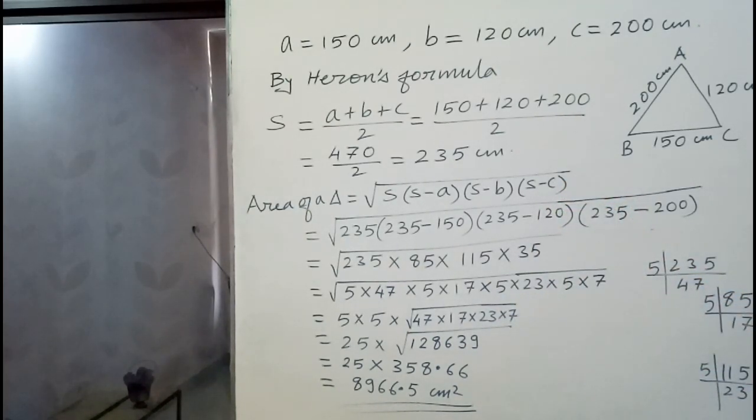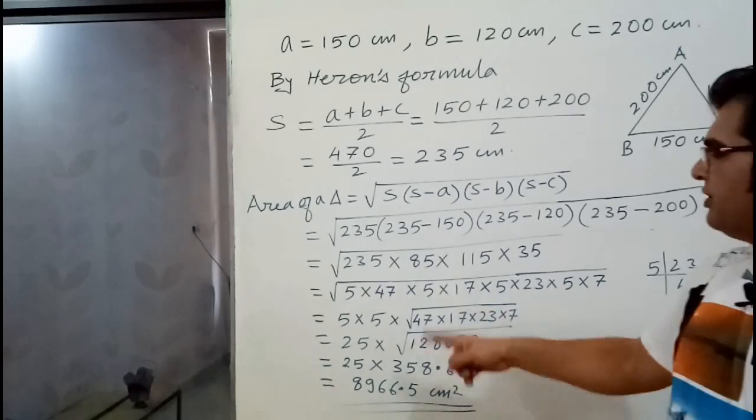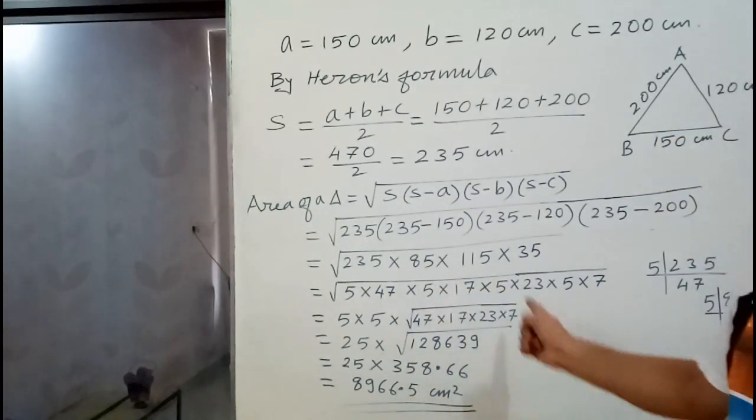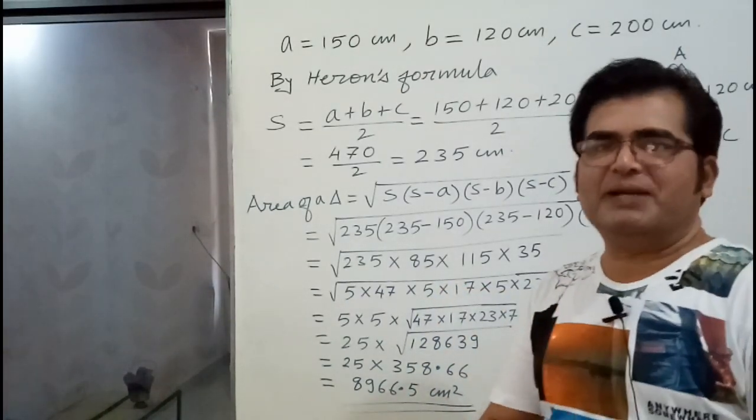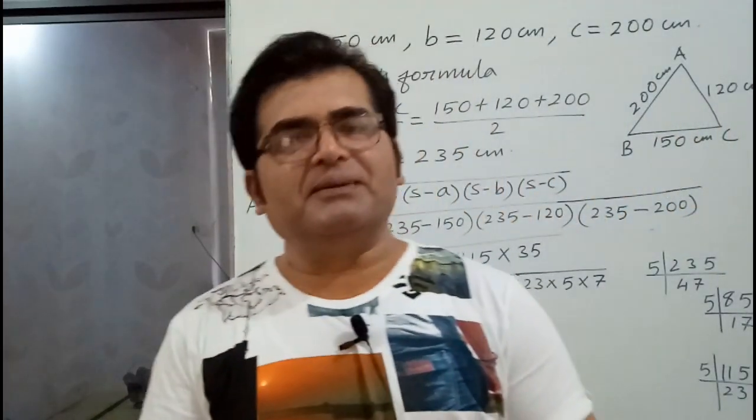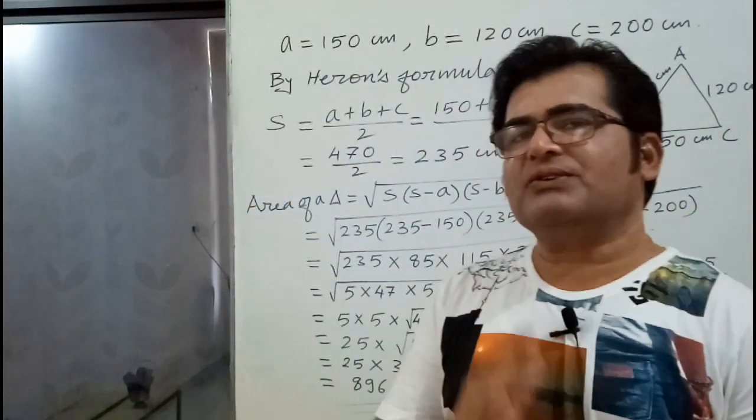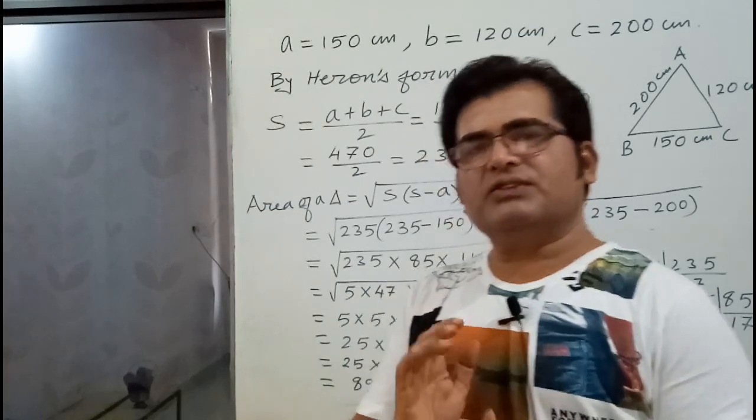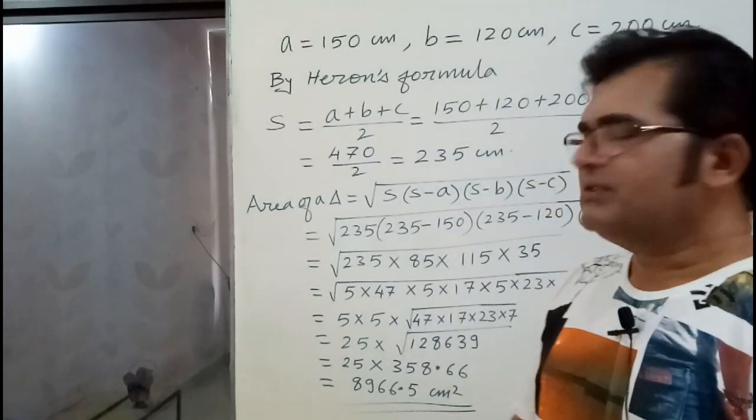Area of a triangle is 8,966.5. Go through all the steps and understand and revise it. By revision, you will get on perfection. Actually, your demand was that because most of the numbers were not in pair, you were feeling difficulty. So I also think that I should solve it.